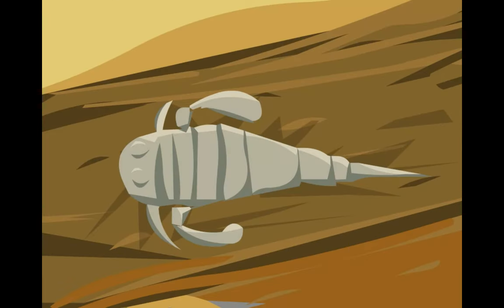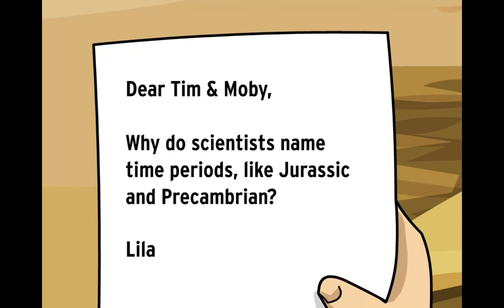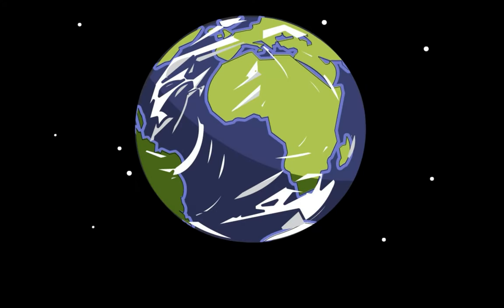A letter asks: 'Dear Tim and Moby, why do scientists name time periods like Jurassic and Precambrian?' Well, kind of to keep track of things — the planet Earth is extremely old, about 4.6 billion years.